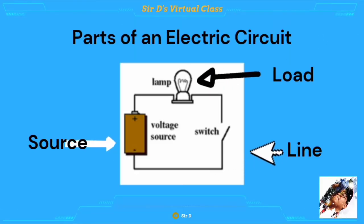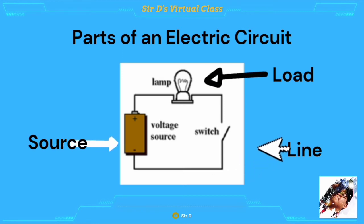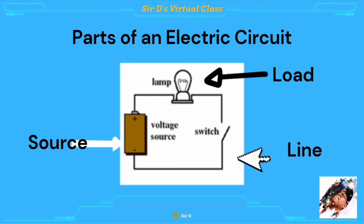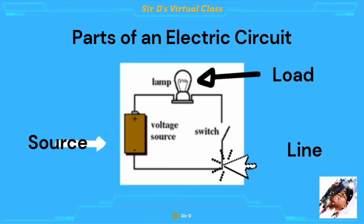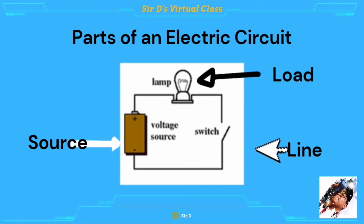Now, just like in that video, electricity, in order for it to move freely, must have its racetrack, and that racetrack is called the electric circuit. There are certain parts of the electric circuit that we must know. First, you have the source — for example, a battery. In order for electricity to flow, it must have a line, which in this example would be the wire. And for the electricity to have its purpose, it needs to have a load, or a current-consuming appliance or apparatus — in this example, the lamp. So when you have these three parts, there is surely the flow of electricity: the source, the line, and the load.